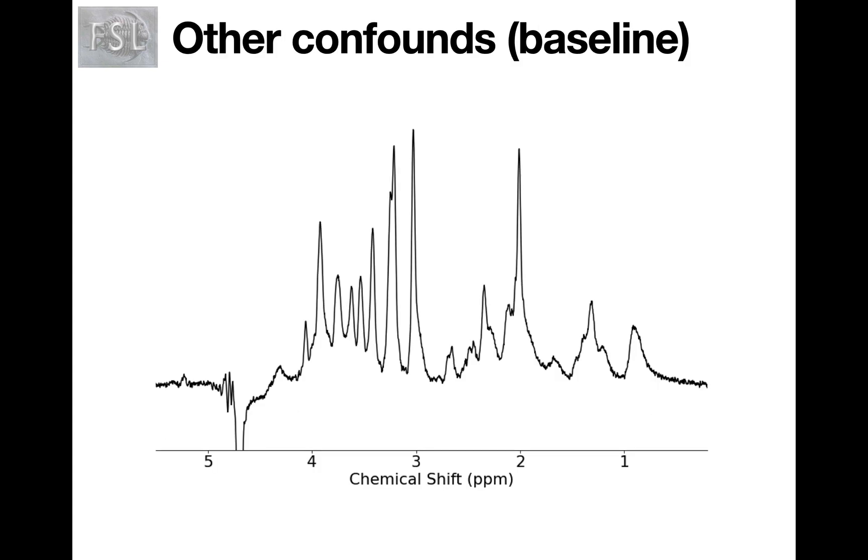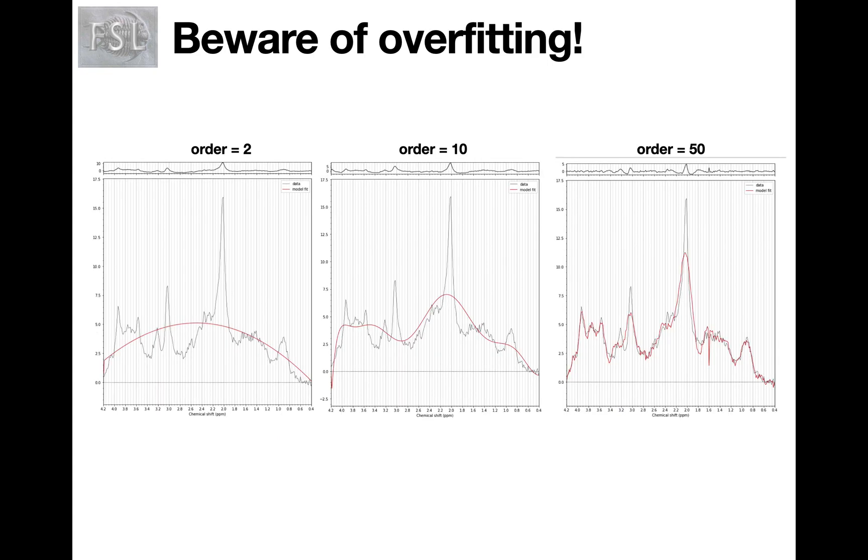An additional confound can be added in the case where we have residual water even after water suppression, and that can take the form of a baseline, generally modeled using a slightly low-order polynomial or sometimes splines. One must be careful not to overfit the data by making the baseline model too complex. So you can see here if we let the baseline be too complex, then we start capturing features in the spectrum that our metabolite spectra are supposed to capture, and this will affect the concentrations that are estimated.